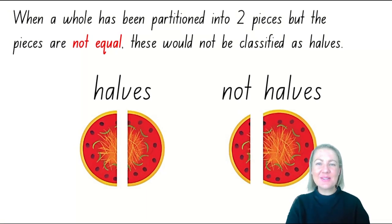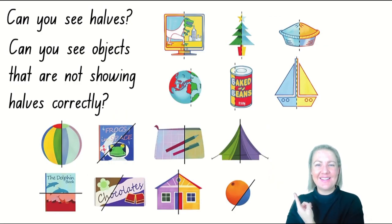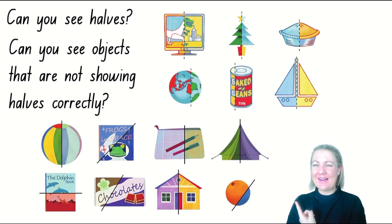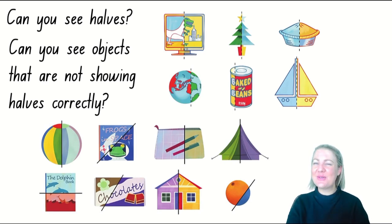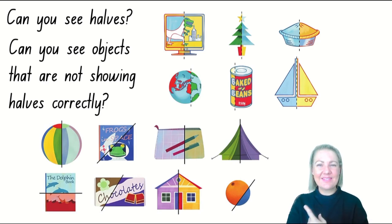Let's take a look at some more pictures with halves. I have some objects next to me showing halves and some that do not show halves. I wonder if you can find the ones that show halves correctly and the ones that do not, because both pieces are not equal. Let's go through each picture and decide if it's halves or not.